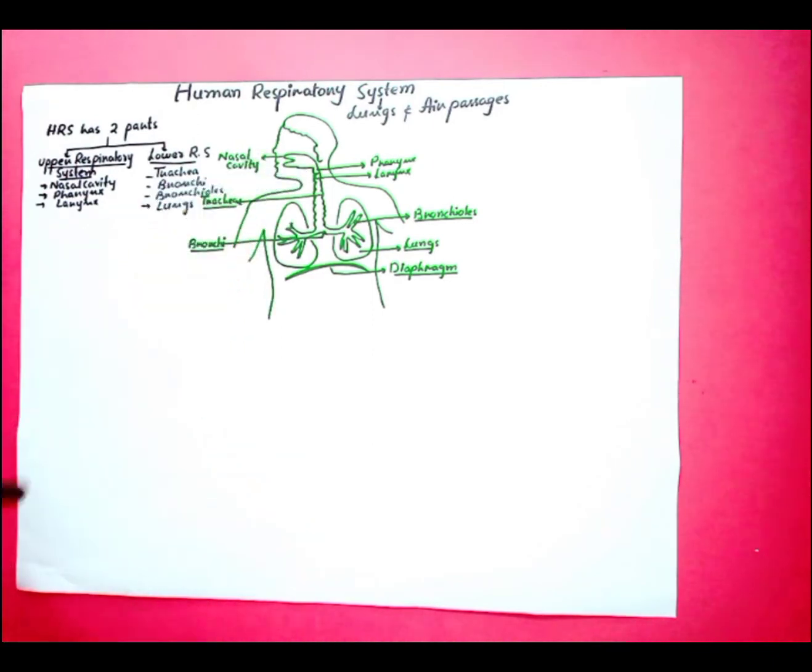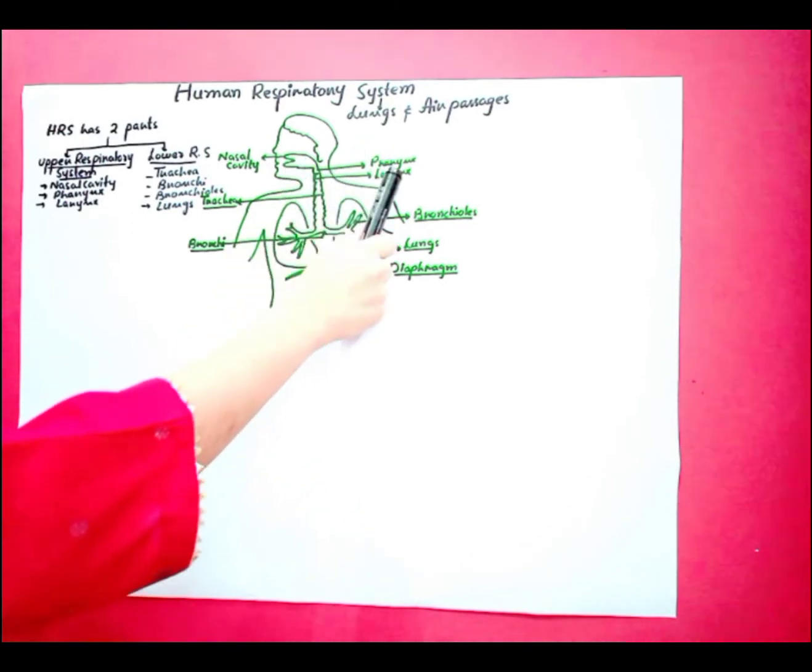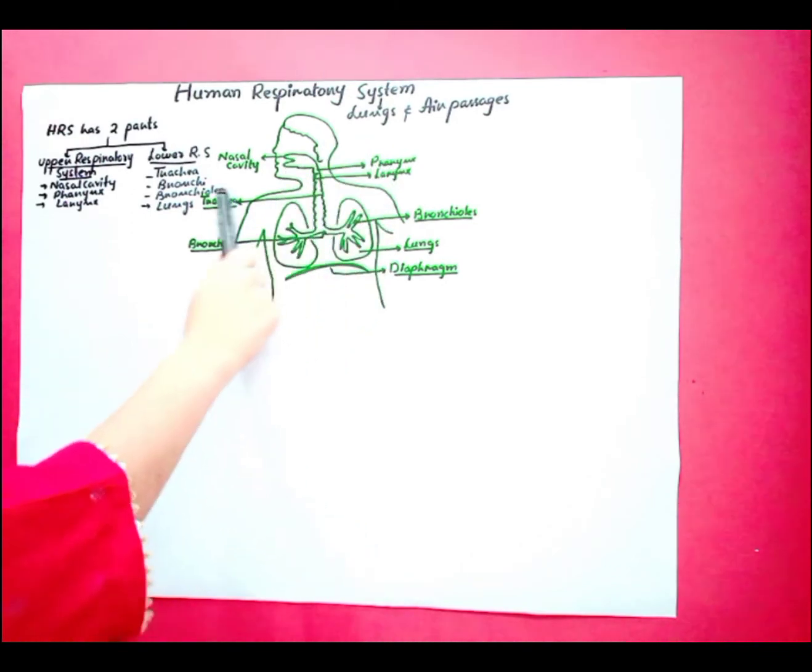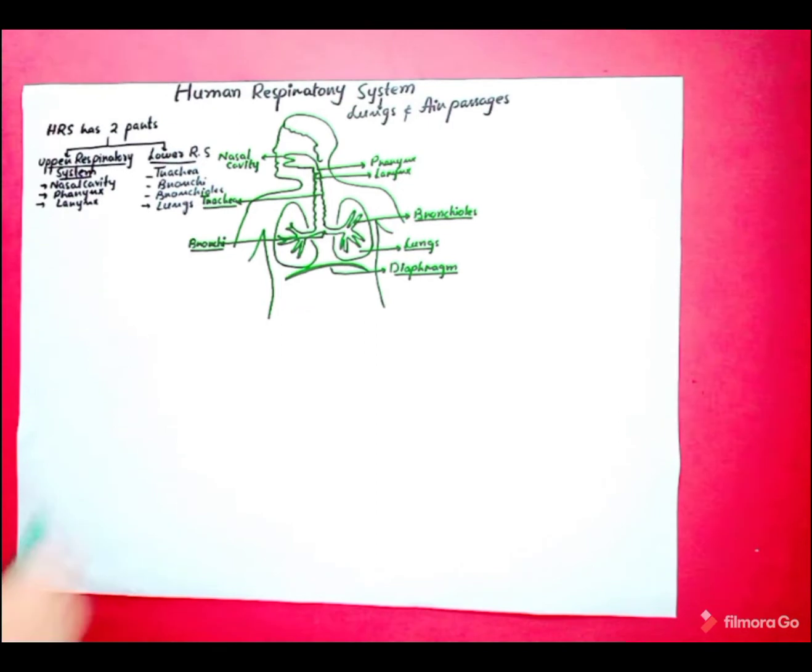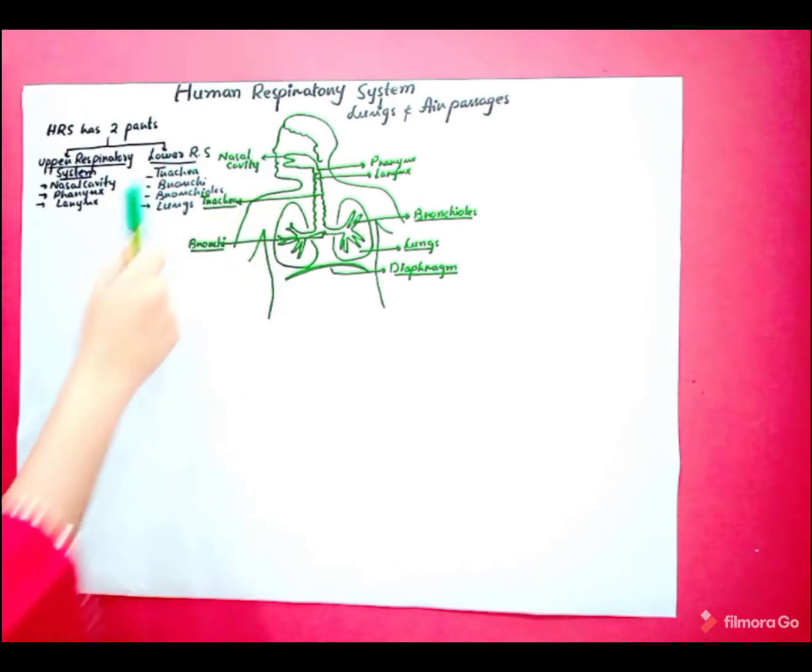The upper respiratory system consists of nasal cavity, pharynx, and larynx, while the lower part starts from the trachea windpipe. Windpipe begins with the bronchi and the bronchi further branch up into bronchioles. When air enters the nasal cavity, the larger dust particles are trapped by the hairs within the nostrils and they filter that air, and the air also becomes moist and warmer.